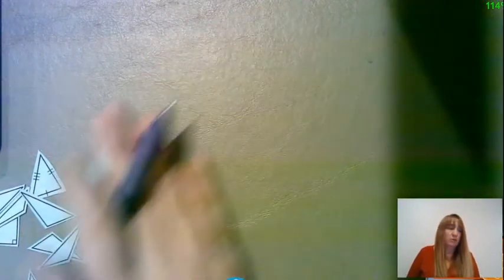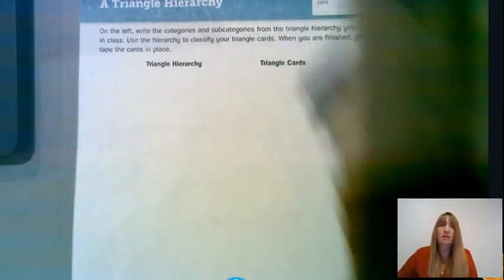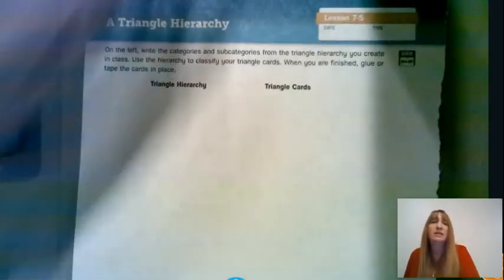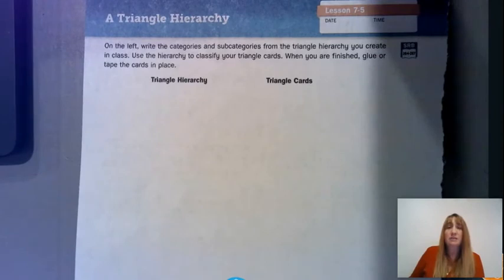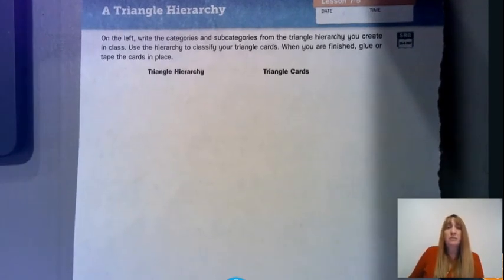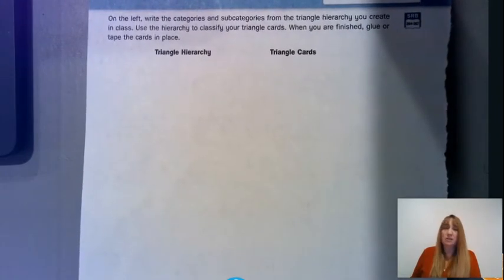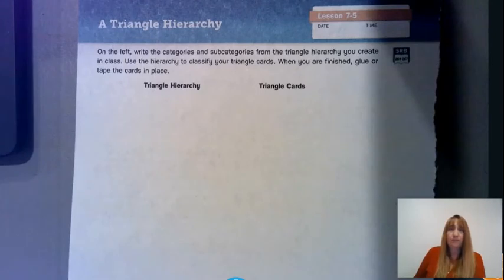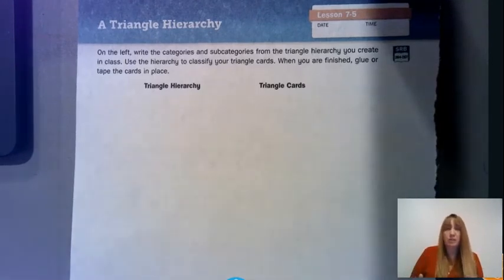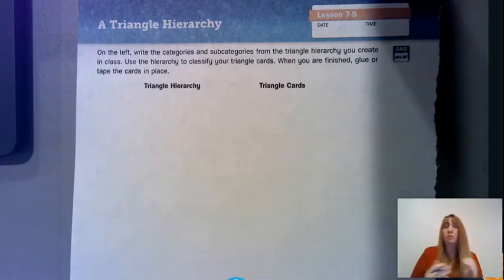Let's work with these triangles in what is called a hierarchy. Look at Math Journal page 246 — we are going to create a triangle hierarchy. It says to write the categories and subcategories from the triangle hierarchy you create in class, use the hierarchy to classify your triangles, and when you're finished, glue or tape the cards in place. So what is a hierarchy? A hierarchy is basically an arrangement of items in which some items are represented as being above, below, or at the same level as one another.